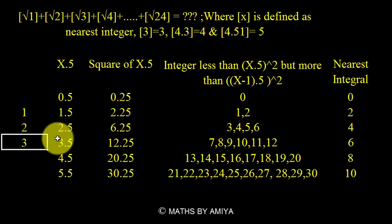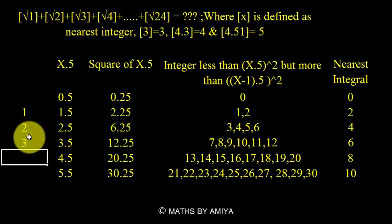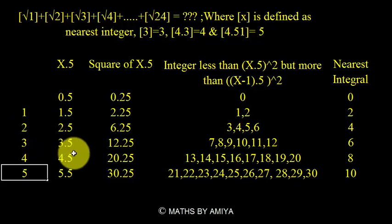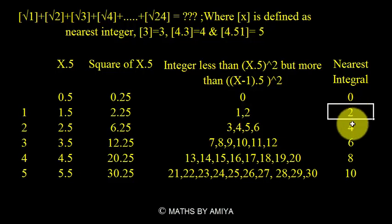So we are getting a series. If we want a nearest square root of 1, 2, 3, 4, or 5, the count of numbers is 2, 4, 6, 8, 10 — just double the nearest integer value.